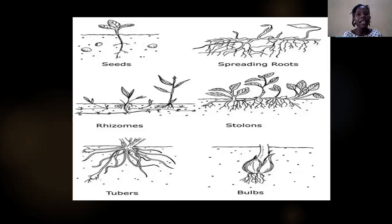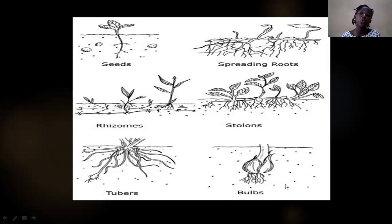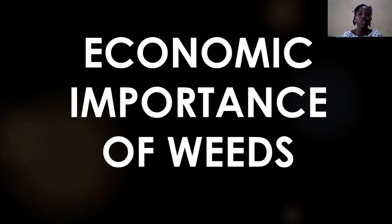Weeds have features like the ability to produce a large number of seeds and they have spreading roots. Their roots may even look dead, but they are very hard to kill — once conditions improve, they germinate and start growing again. They also have other features like rhizomes, stolons, tubers, and bulbs that make them able to adapt to adverse weather conditions.